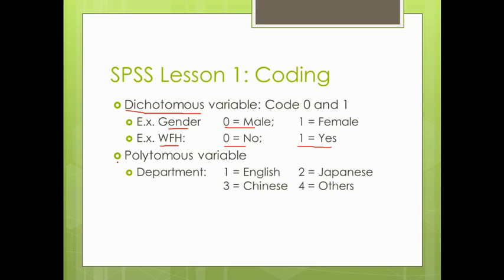Another lesson to learn is how to code polytomous variable. So polytomous variable refers to any variable in your study that provides more than two values or two options for the participant to choose from.